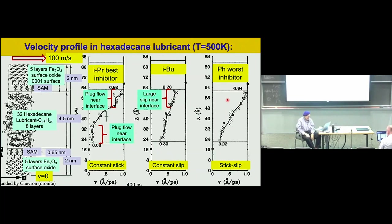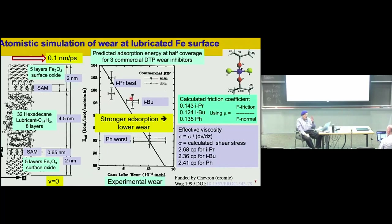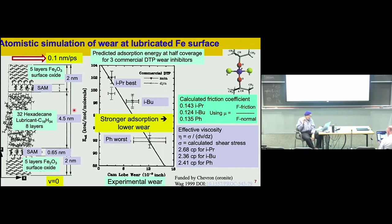The worst of all is where you have stick-slip. These simulations are atomistic but with non-reactive force fields. We did model calculations about 25 years ago where we had about eight layers of lubricant — you need eight layers because the shear goes in about four layers. What we find is that wear is related to the absorption at the surface: the least wear occurs when we have strong interactions between the first monolayer of the fluid and the surface. We get a good correlation with performance at that level.